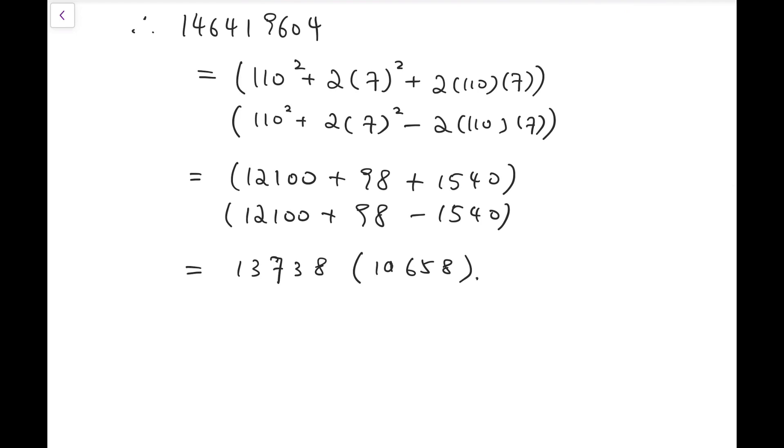So we're one step closer to the prime factors. Now, we can further factorize these numbers because it's obvious that we can do that because they are even. So the first thing, 2 times 6869, and the second number is 2 times 5329.